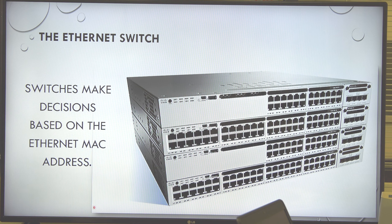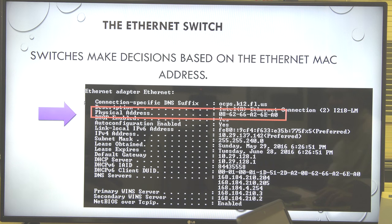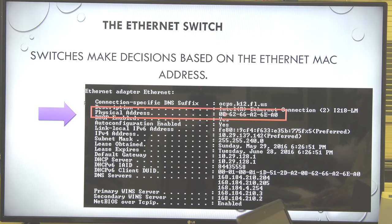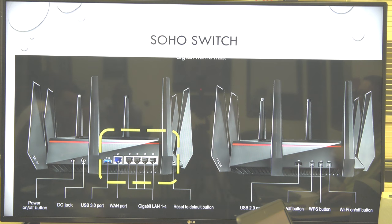Here's ipconfig — you can see the physical address, which is also called a MAC address. Some vendors display the MAC address with dashes between the octets, and some vendors use colons. Don't get confused — they're the same thing. On the back of a small home router, that portion with multiple ports is the switch.